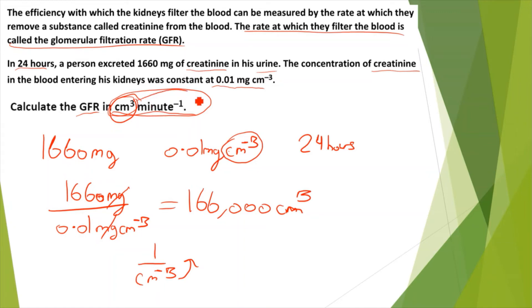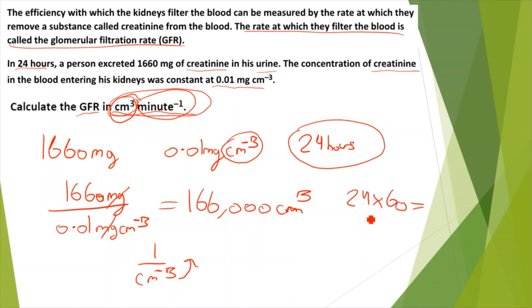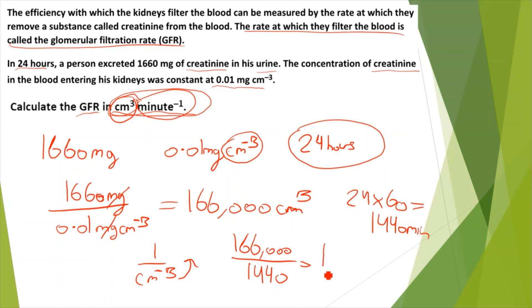But I need my final answer in centimetres cubed per minute to the power of minus 1. So I need to divide by some form of minutes. I don't have any minutes — I have 24 hours. So I convert: 24 times 60 gives 1440 minutes. Then I divide 166,000 centimetres cubed by 1440 minutes, and this gives my final answer: 115.3 centimetres cubed minute to the power of minus 1.